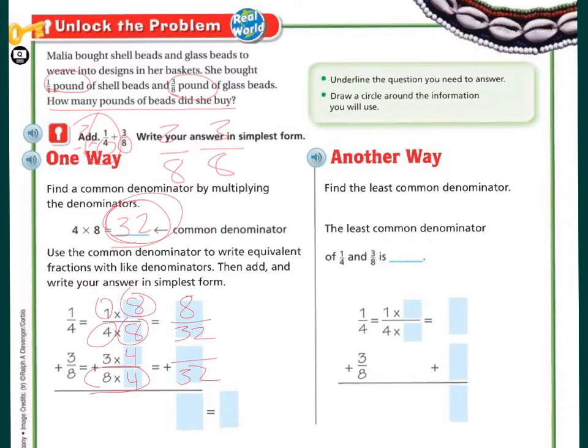Again, whatever I do to the bottom, I have to do to the top. 3 times 4 is 12. So I have 8 32nds and 12 32nds. 8 plus 12 is 20 32nds. Now, if I'm going to reduce that to its simplest form, the number 4 goes into 20 five times. The number 4 goes into 32 eight times. So there's my simplest form.